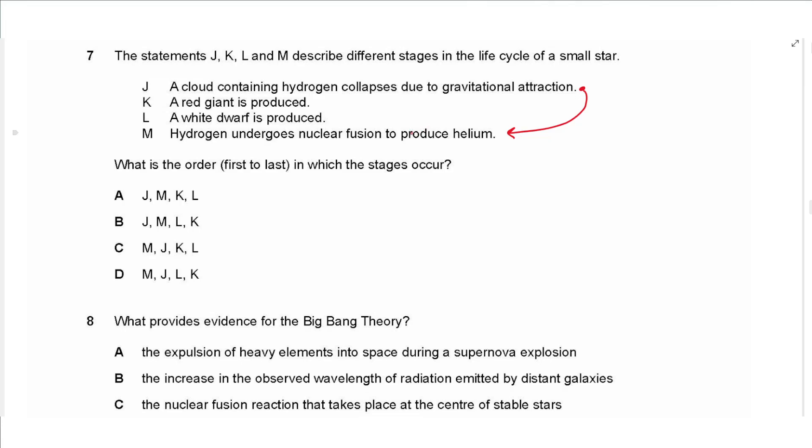Eventually, when the fusion of hydrogen ends and helium fusion starts, a red giant is formed. And when all fusion ends, a white dwarf is formed. This is for a low mass star. So we have J, M, K, then L. So the answer is A.